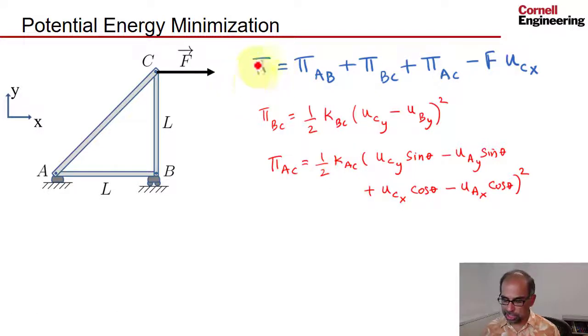I talked about how the potential energy of the truss gets calculated in terms of the pin displacements. Now let's consider how that potential energy will change as I move pin C in the vertical direction, keeping everything else the same. I'm plotting the potential energy of the truss versus the displacement of pin C in the vertical direction.